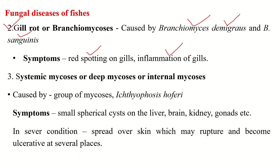This disease attacks the gills and is called gill rot. It is caused by Branchiomyces type of fungi. The symptoms include red spotting on the gills which are ultimately destroyed.